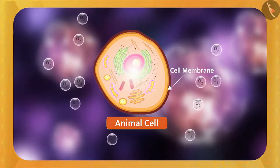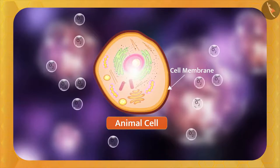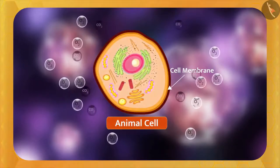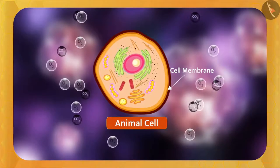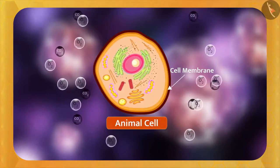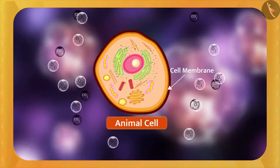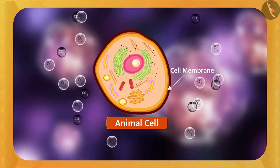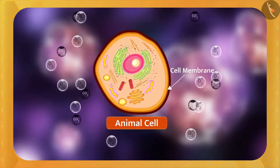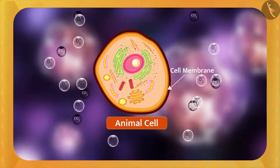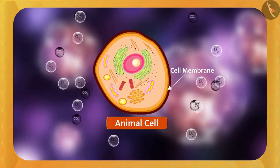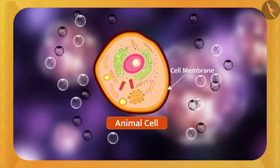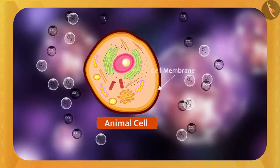When the cell makes energy, carbon dioxide, that is CO2 gas, is produced in the cell which has to go outside. Now, the concentration of carbon dioxide gas molecules in the cell is higher than outside. So, diffusion occurs again — the movement of the molecules of carbon dioxide gas will be from inside to outside of the cell. In this way, the gases in the cell are transported by the diffusion process.